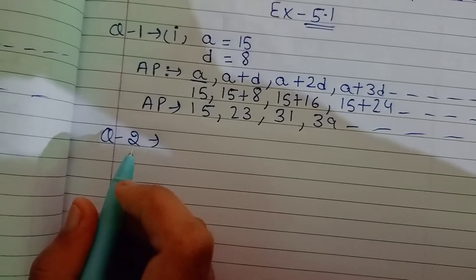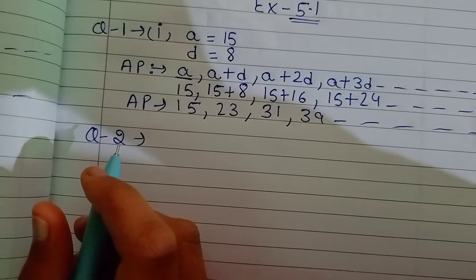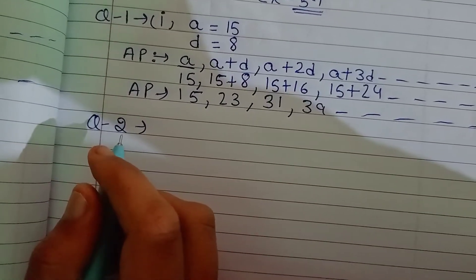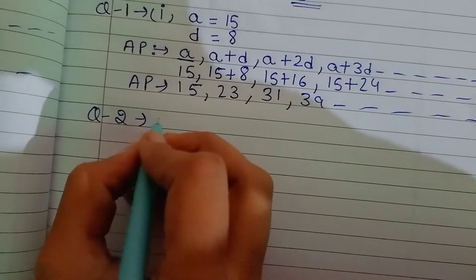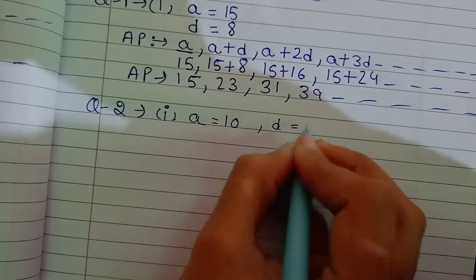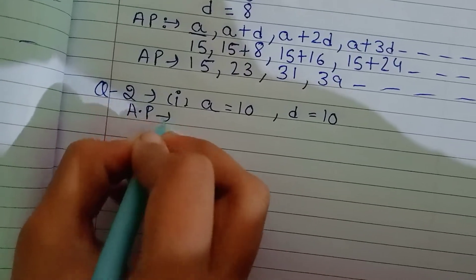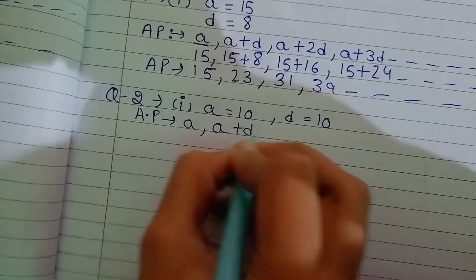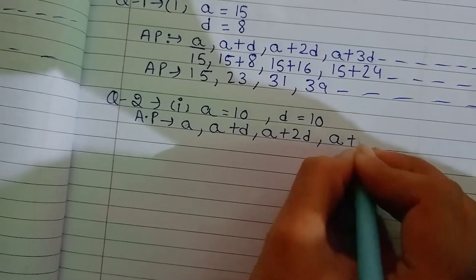Now we will start question number 2. Write first four terms of AP when the first term a and the common difference d are given. This has said that we have AP where we have a value and d. First part, a is equal to 10, d is equal to 10. So AP, I have given you a formula: a, a plus d, a plus 2d, a plus 3d.